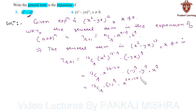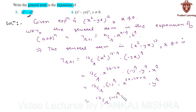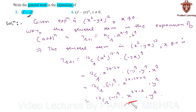This is further equal to 12Cr × (-1)^r × x^(24 - 2r - r) × y^r, which gives us 12Cr × (-1)^r × x^(24-3r) × y^r. Hence, this is the general term of this expansion. This completes our solution.